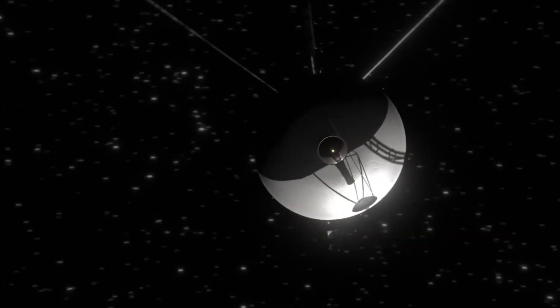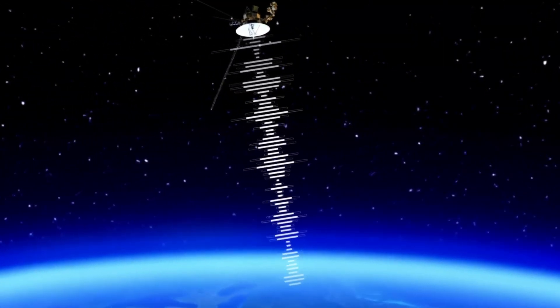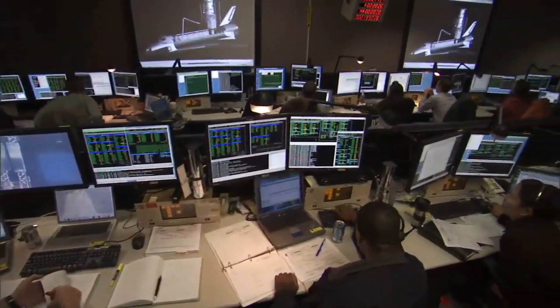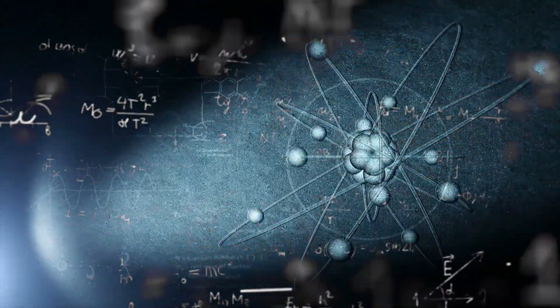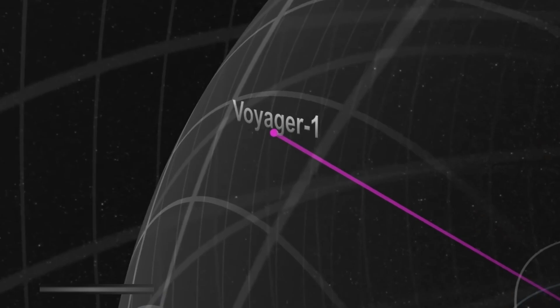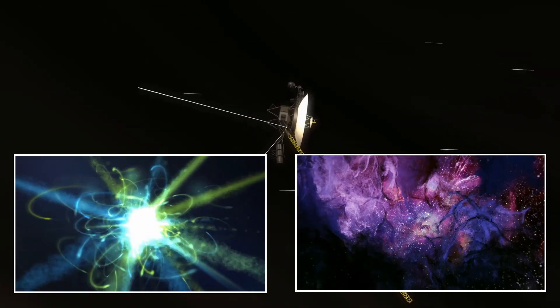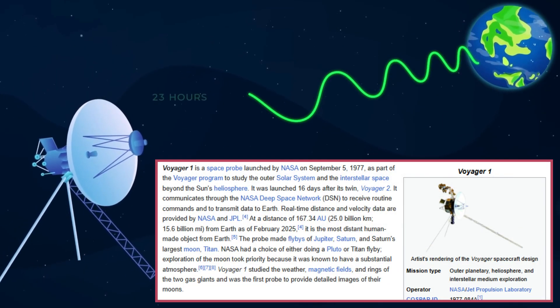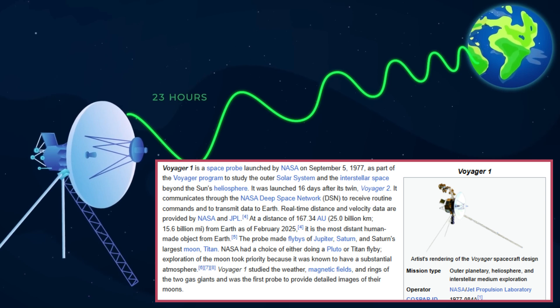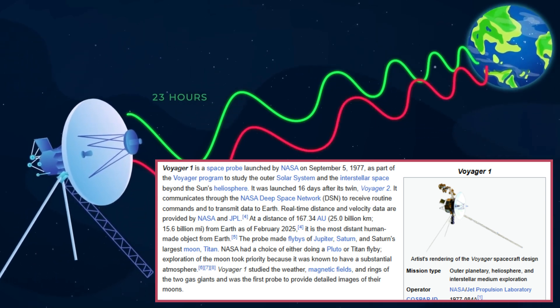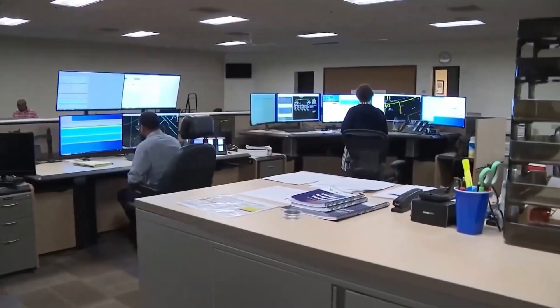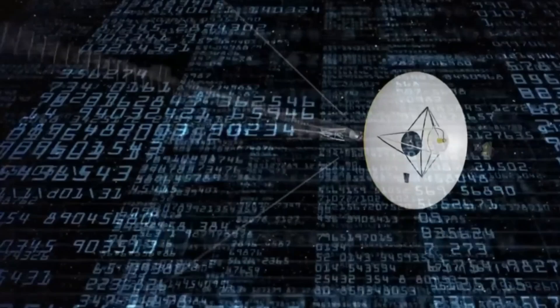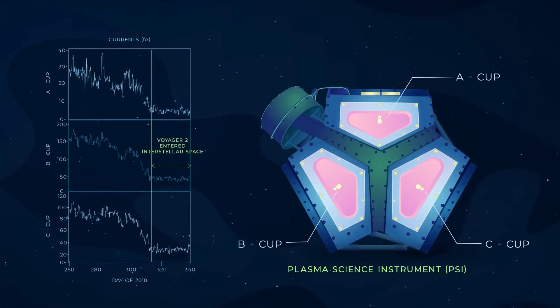For years, Voyager 1 has been sending back valuable information about interstellar plasma, cosmic radiation, and the environment beyond our solar system. But its latest signal, possibly its final message before it goes silent forever, contains something completely unexpected: the structured neutrino pattern that has baffled scientists. The transmission appeared routine at first. The spacecraft's instruments were still functioning, though slightly degraded. But when scientists at NASA's Jet Propulsion Laboratory (JPL) and CERN analyzed the data, they found a repeating sequence embedded within the background noise, a pattern resembling neutrino oscillations, something that Voyager 1 should never be able to detect.